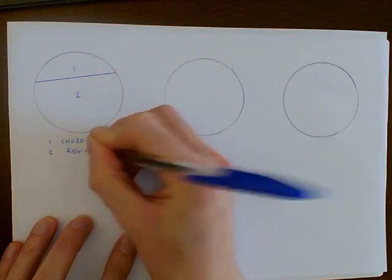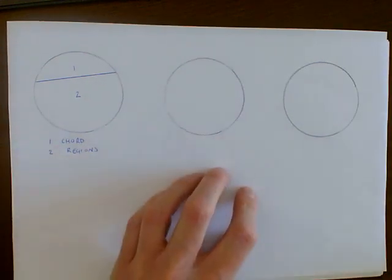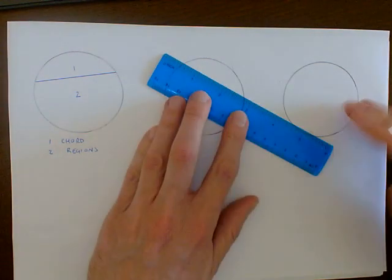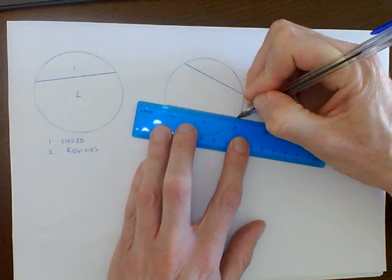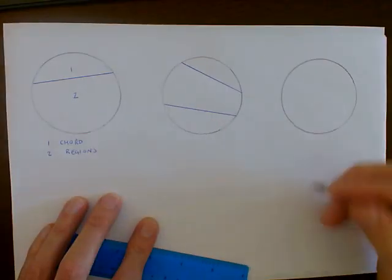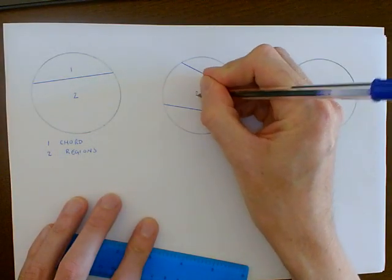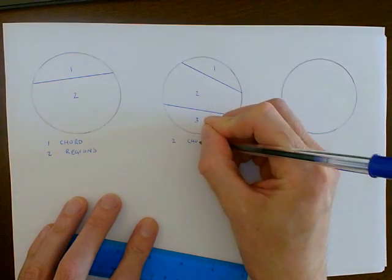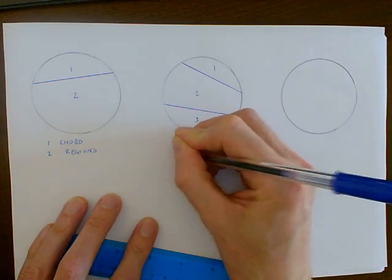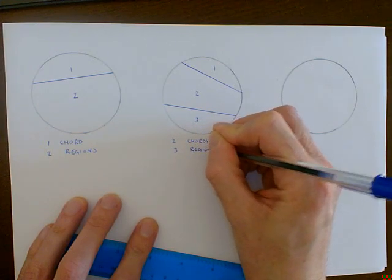If I increase my number of chords to two, I could draw them like this, one there and one there, and chop that circle into one, two, three regions. So two chords and three regions.